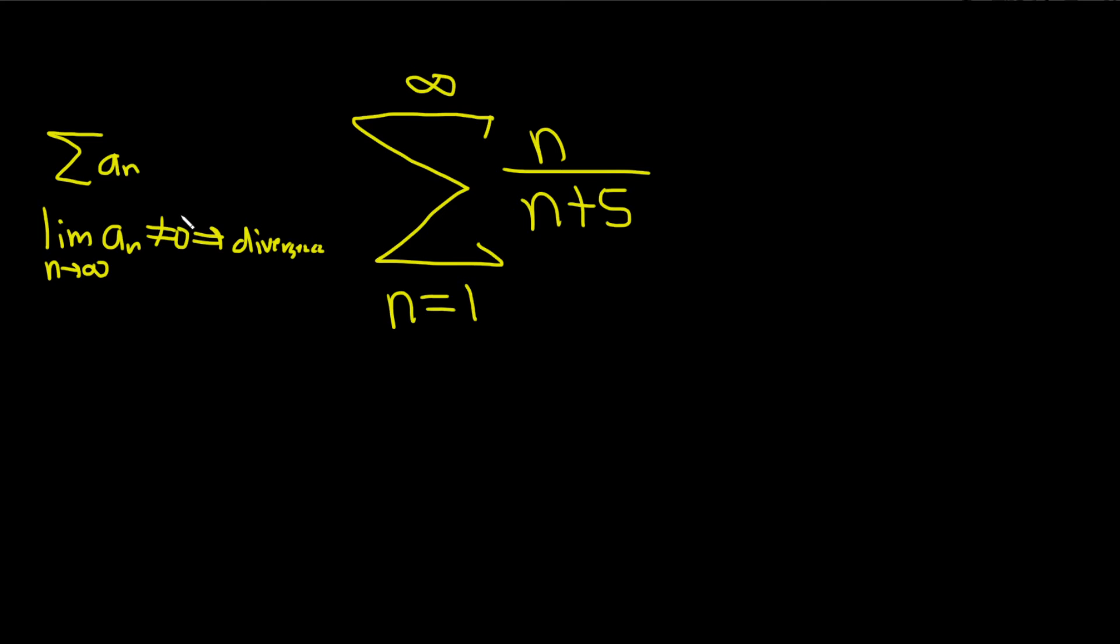So for any series, if you take the limit of whatever is here and you don't get zero, then you know your series diverges.